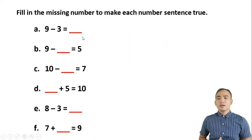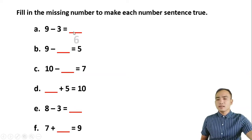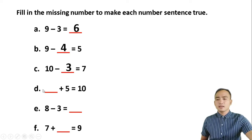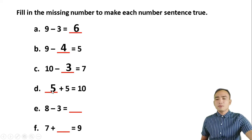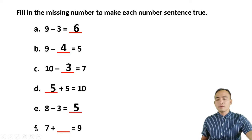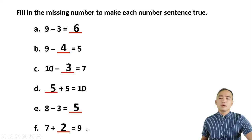Fill in the missing number to make each number sentence true. Letter A: 9 minus 3 is 6. B: 9 minus blank is 5 — the missing number is 4. Letter C: 10 minus blank is 7 — the answer is 3. Letter D: the missing number is 5, because 5 plus 5 is 10. Letter E: 8 minus 3 is 5. And letter F: 7 plus blank is 9 — the answer is 2, because 7 plus 2 is 9.